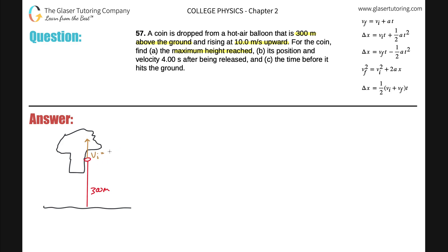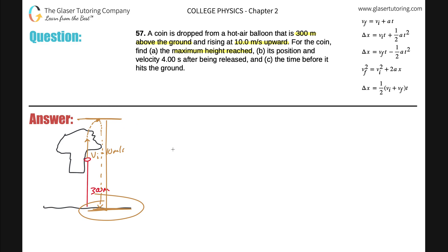Now it says: find the maximum height reached. What's going to happen is the coin will travel up after it's released, reach some highest point, then travel back down and eventually hit the ground. We need to find the total height. The maximum height relative to the Earth - they're asking for the total height between the ground and the highest point.